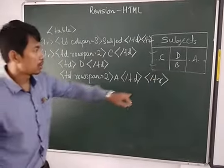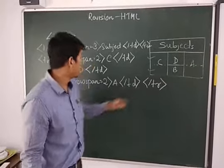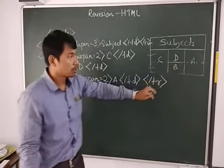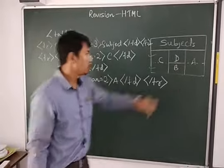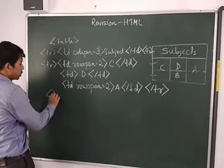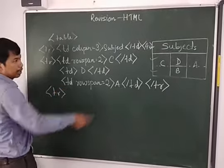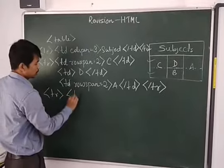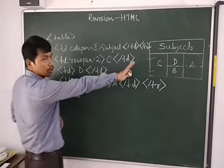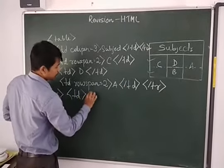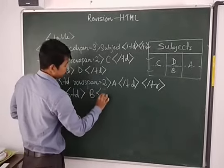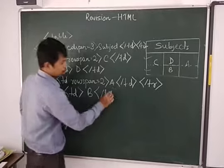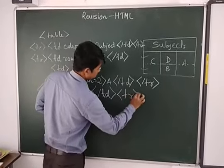Now for the third row, in the third row c already we have used, then a already we have used, only remain this b. So we will write only b for the third row, that is td. Since c gone so d will be there, so td table data. Since no rowspan or colspan is there, so we will just close it and write b, and then closing td, then at last table row close.